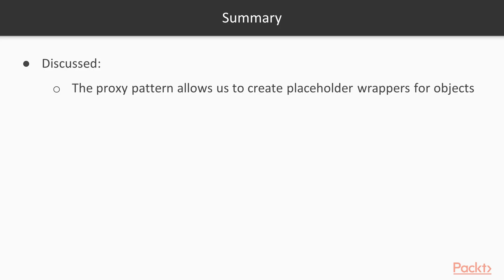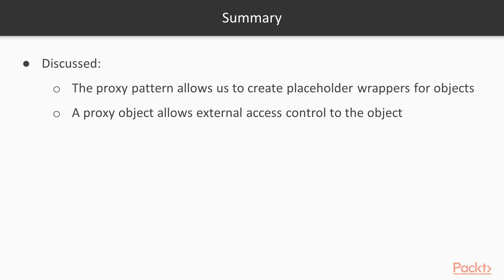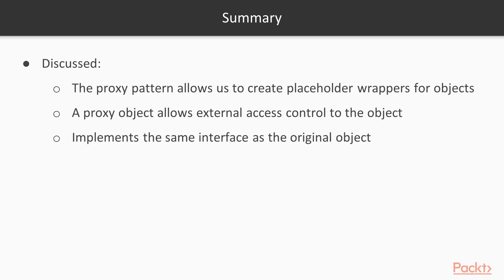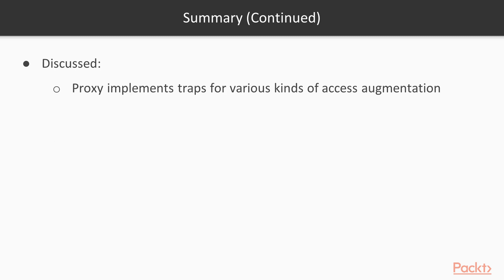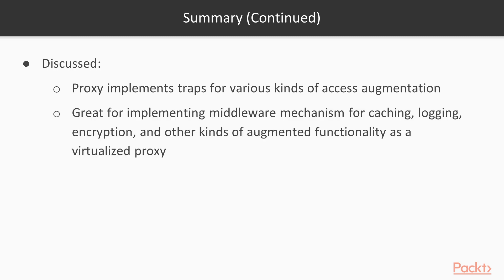Let's summarize. The proxy pattern allows us to create placeholder wrappers for objects and allows us to externally control access to these objects. The proxy implements the same interface as the original object and thus offers a seamless experience to the consumer. To implement the pattern, we can use the Proxy API. The Proxy API implements traps that allow us to hook into various kinds of access types, and these can then be used to augment how the object responds. Proxies are great for implementing a kind of middleware mechanism and can be used to offer caching, logging, encryption, and other kinds of augmented functionality as a virtualized proxy.